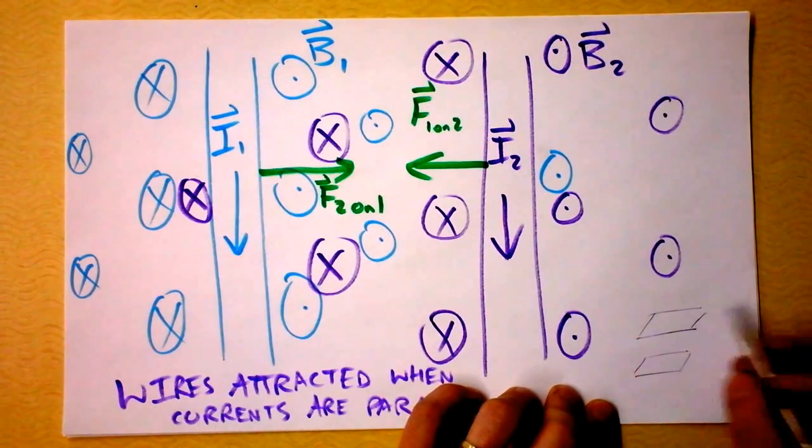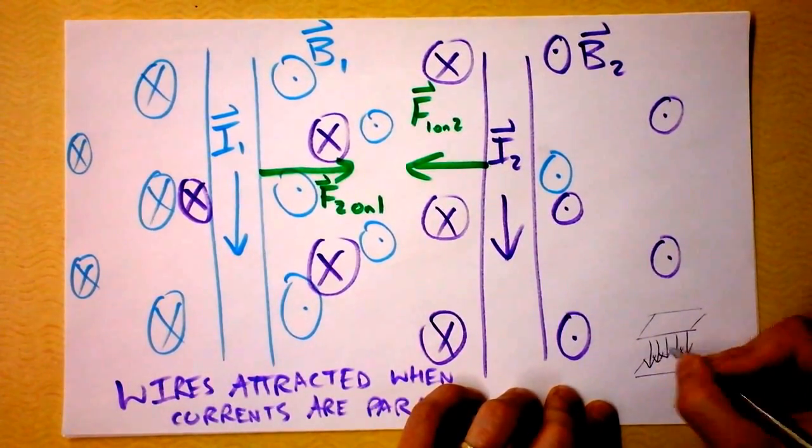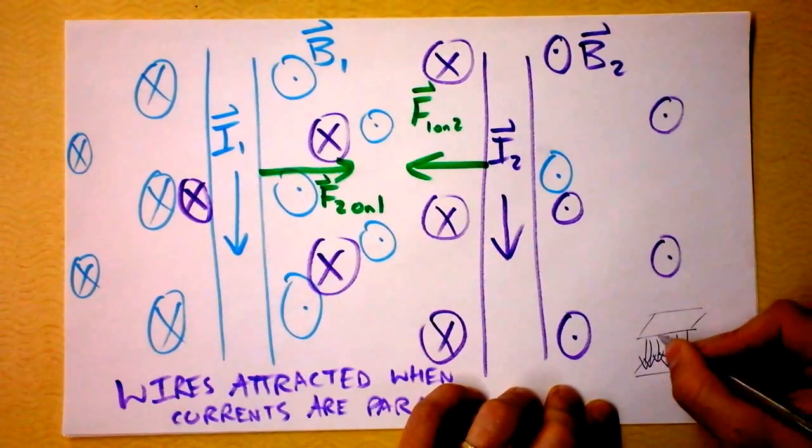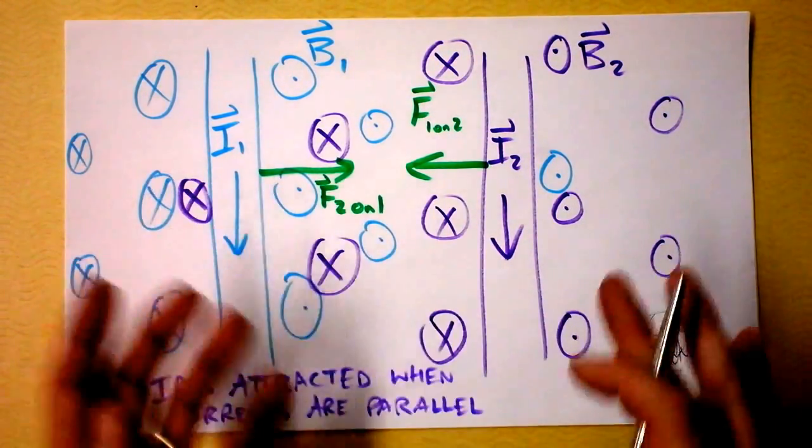This is sort of the opposite of a parallel plate capacitor, in which we found that the electric field between the two plates was really, really, really big, and we found virtually no electric field outside of the two plates in a parallel plate capacitor. It's kind of the exact opposite of that situation.